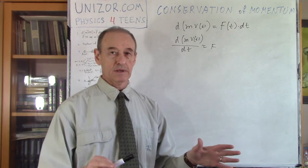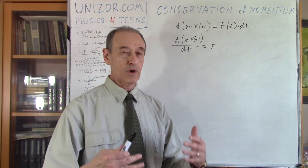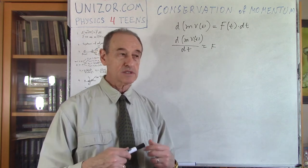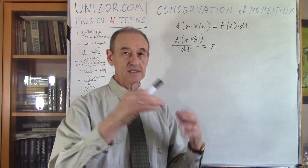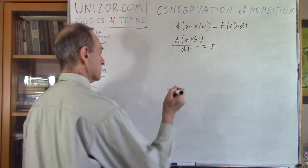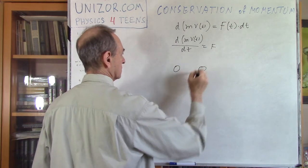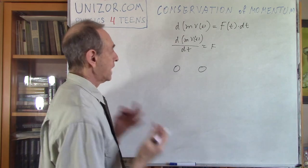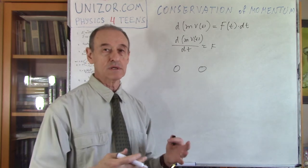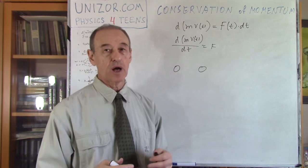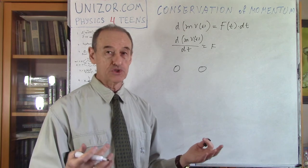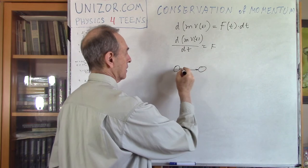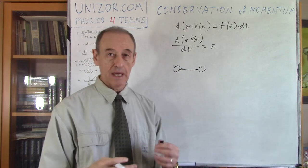This is kind of a simple thing. What's a little bit more important, interesting — let's switch from one object to a system of objects. Let's consider you have two objects, or three, or N, it doesn't really matter. What happens if there are no external forces acting on these objects? Then the only action which can really change something is their action against each other.